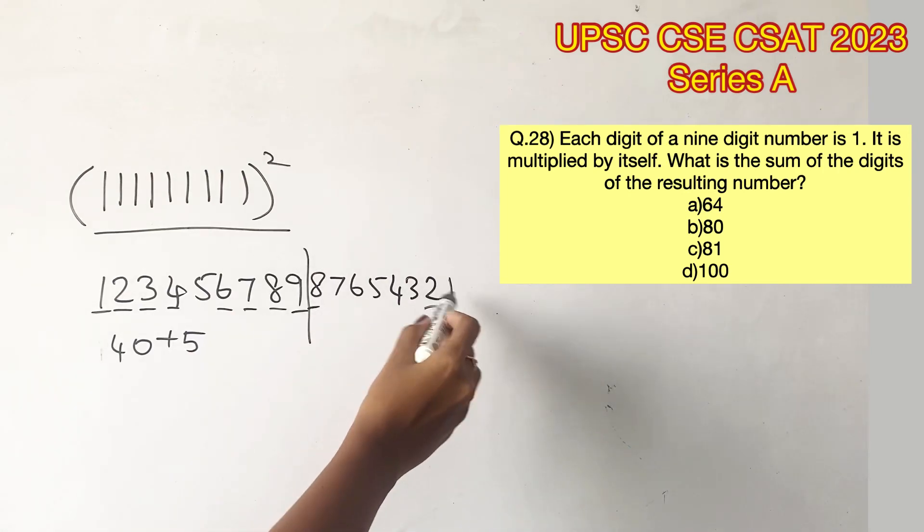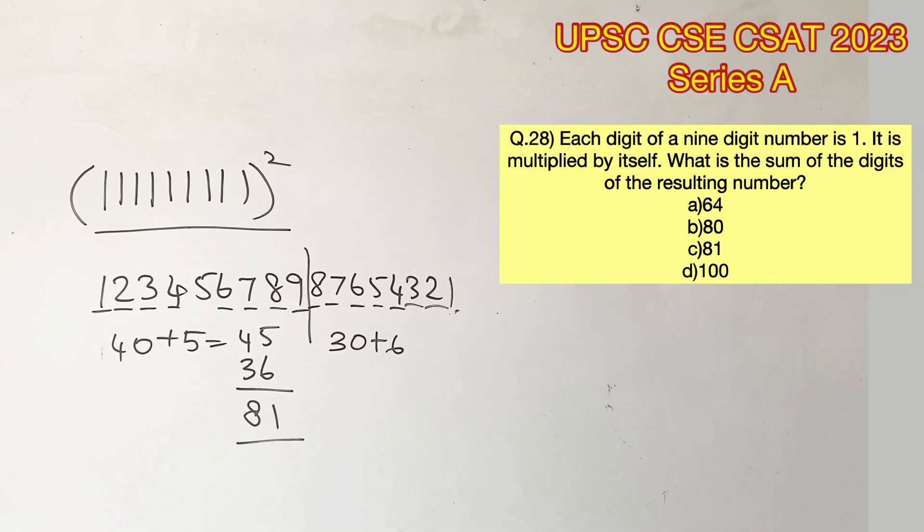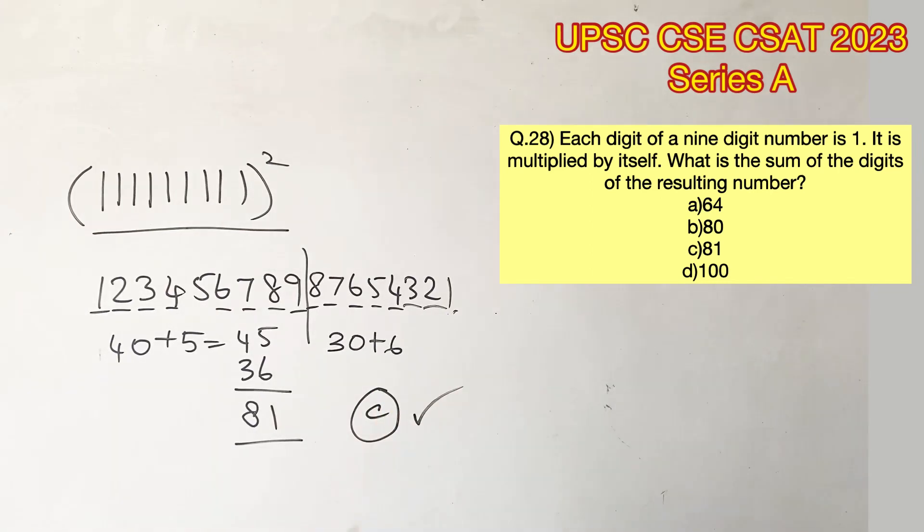If you see here, 8 and 2, 7 and 3, 6 and 4 will give 30, and 5 and 1 are remaining. So 30 plus 6. Adding everything together, we get 81 as the answer. Therefore, option C is the right answer.